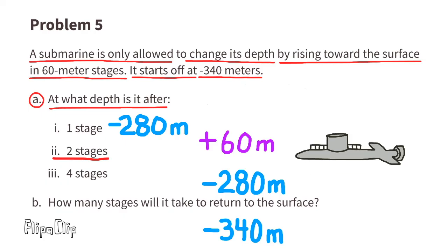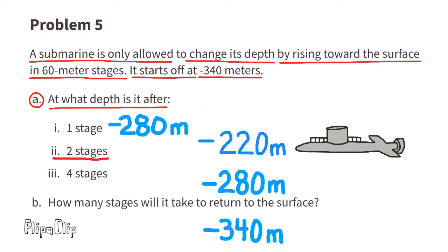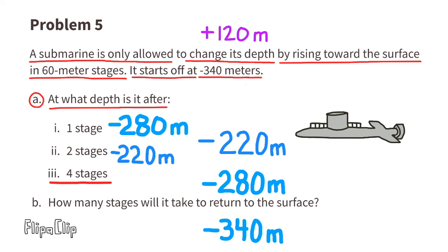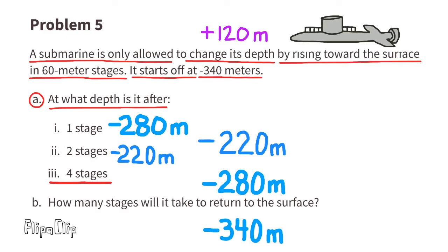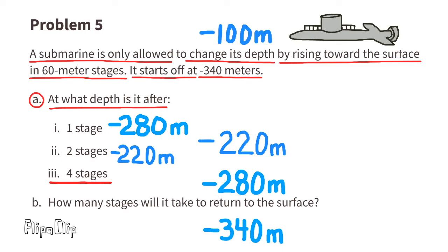Finally, what's its location after four stages? Now we need to rise up two times 60, or rise up 120 meters. Negative 220 plus 120, that equals negative 100 meters. The submarine is located 100 meters below the surface of the ocean.